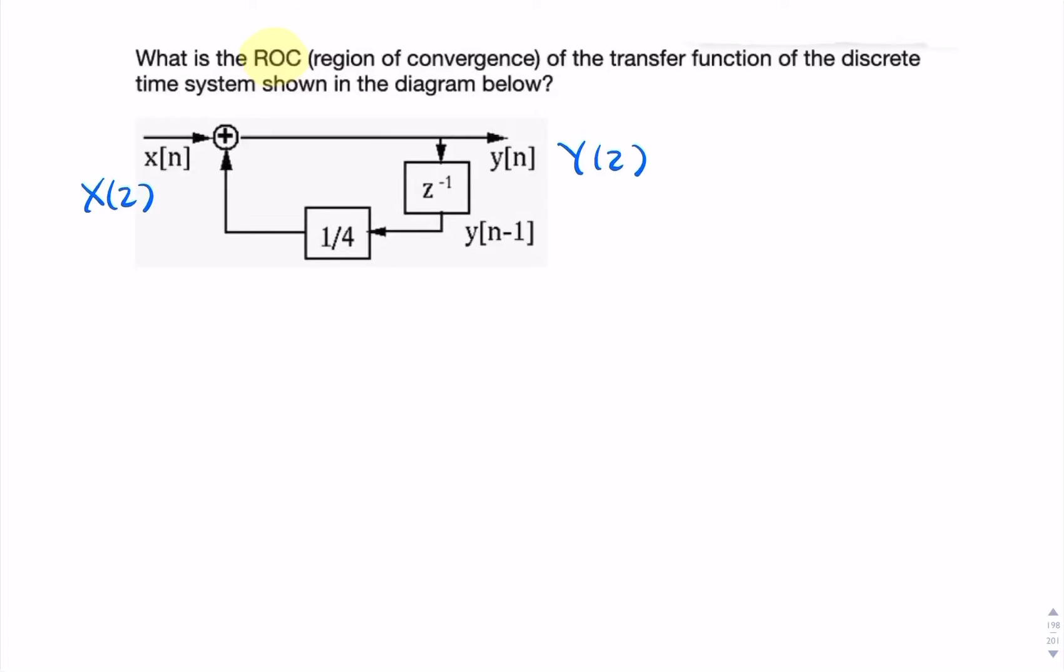Now y of n seems to be the sum of x of n and a delayed and scaled version of y of n. So I can write y of z equals x of z plus a quarter times z to the minus 1 times y of z. So that's my delay, and that's my output.